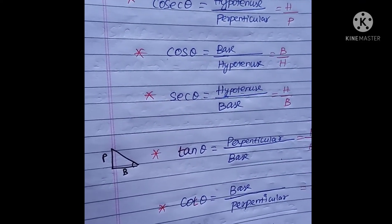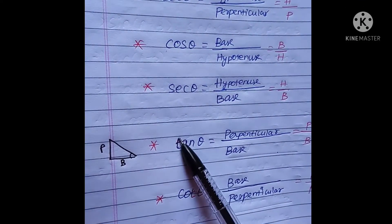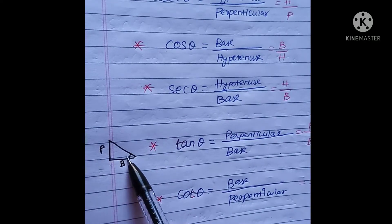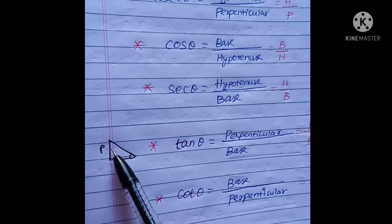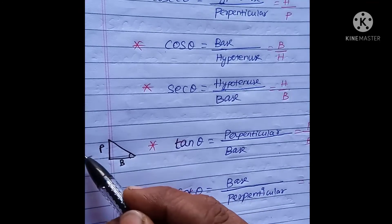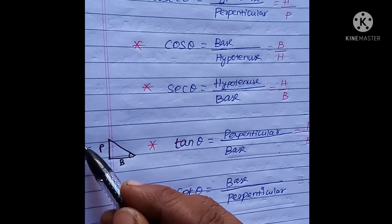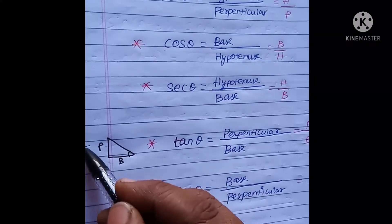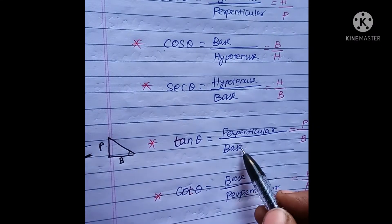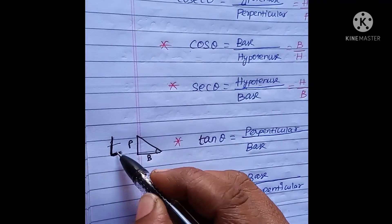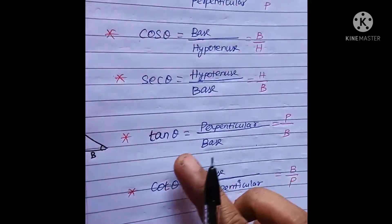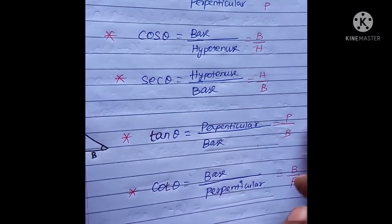Now tan is easy. Tan theta uses the same trick. This shape is the T shape — perpendicular divided by base. Tan theta equals perpendicular divided by base.